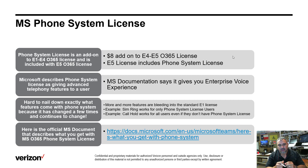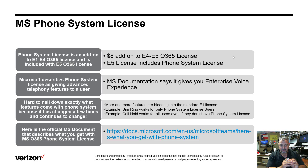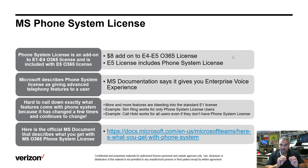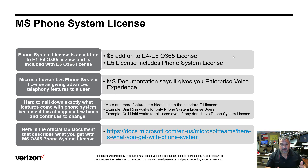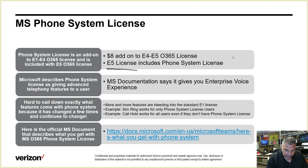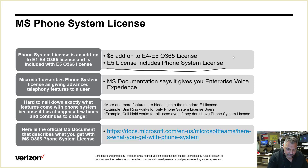A bit of history: about eight months ago, the Phone System license meant that if you added it to an E1 through E4 license, or if you had an E5 license, you'd get a little phone tab in Microsoft Teams. That phone tab allowed you to make internal calls, or external calls if you had some extra licenses. Now it's shifting a bit.